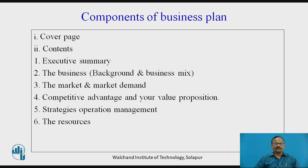Strategic Operations Management: It should be efficient. What are your values? What are the plans for a lean system? Supply and buyer management. Next is Resources — the team: key skills in the field of technology, management, marketing, and operations.